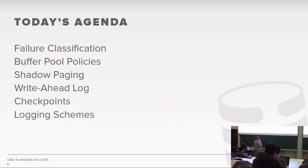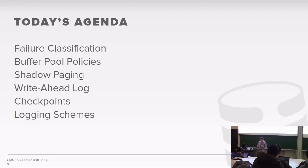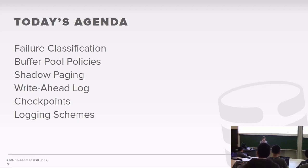For today's agenda, we're going to cover a lot. First, we'll talk about what kinds of failures we have to deal with in our database system, which will motivate a scheme to make sure everything is safe. Then we'll talk about changes to the buffer pool manager to decide when it's safe to move data in and out. Then we'll cover shadow paging as one possible implementation to ensure durability. Then write-ahead logging, the most common scheme, which you'll implement in project four. And then checkpoints and different types of logging schemes.